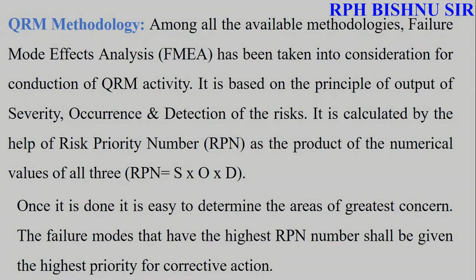Now describing the QRM methodology. Failure Mode and Effects Analysis, FMEA, should be considered. The RPN — Risk Priority Number — is calculated using: S means Severity, O means Occurrence, D means Detection. The RPN is calculated by multiplying these three values: S × O × D.